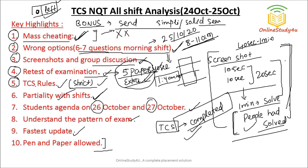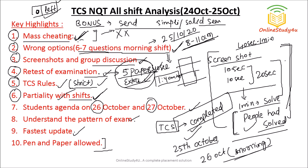There was partiality with the shifts as well. The 25th of October examination questions were pretty easy, but 26th of October — especially the morning shift — was quite difficult. One reason is the wrong options, and there were also some confusing questions. There will always be some partiality with shifts and we depend on our luck. But TCS is quite supportive and looking into all those aspects, so a retest of the examination will definitely happen.